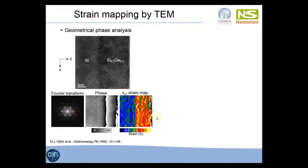The strain we calculate is defined relatively to the substrate. For example, the strain is positive in the silicon germanium layer because the lattice parameter of the silicon germanium is larger than the lattice parameter of the silicon.